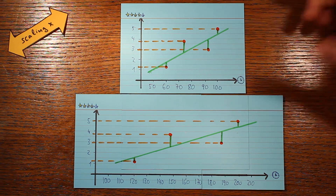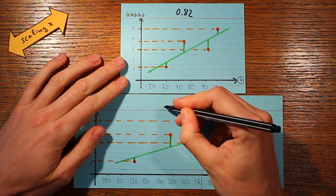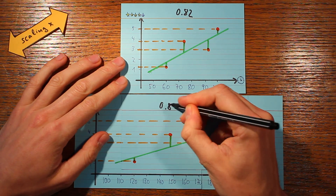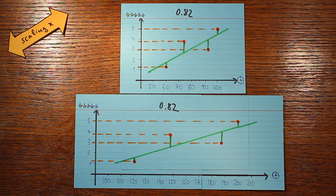So in both plots the correlation coefficient is the same. That's really useful because it means the correlation coefficient doesn't care if you multiply the x values by a positive constant.